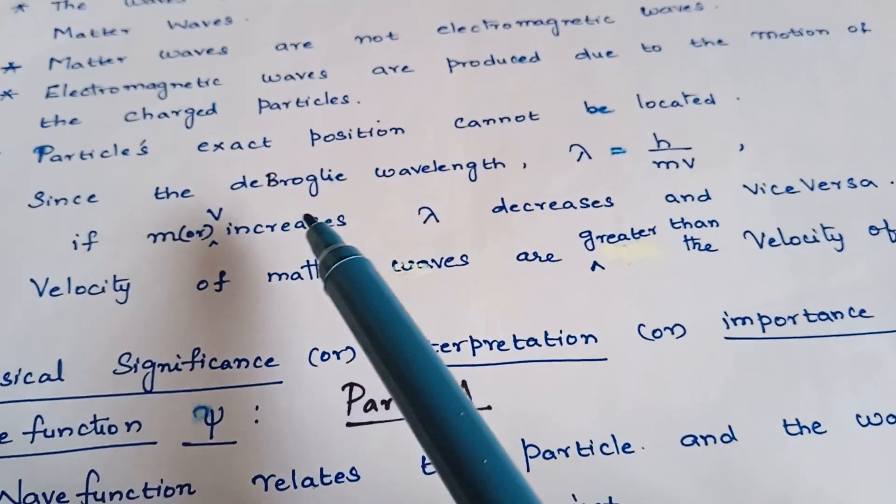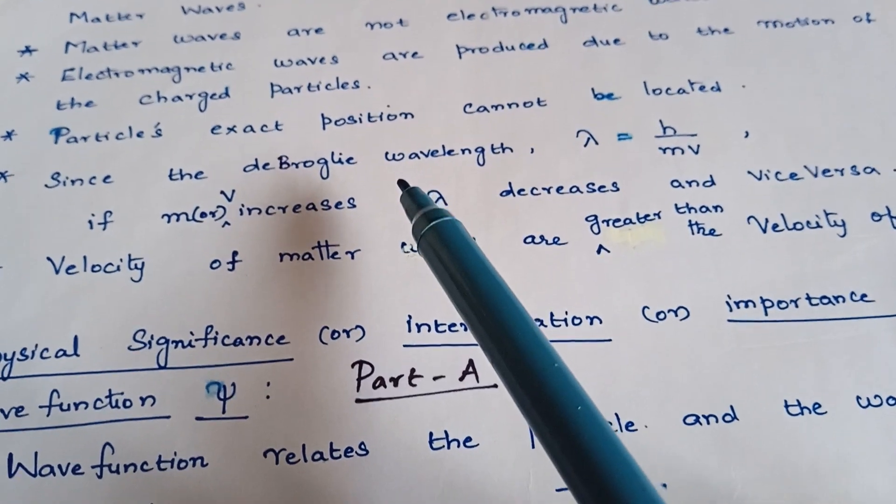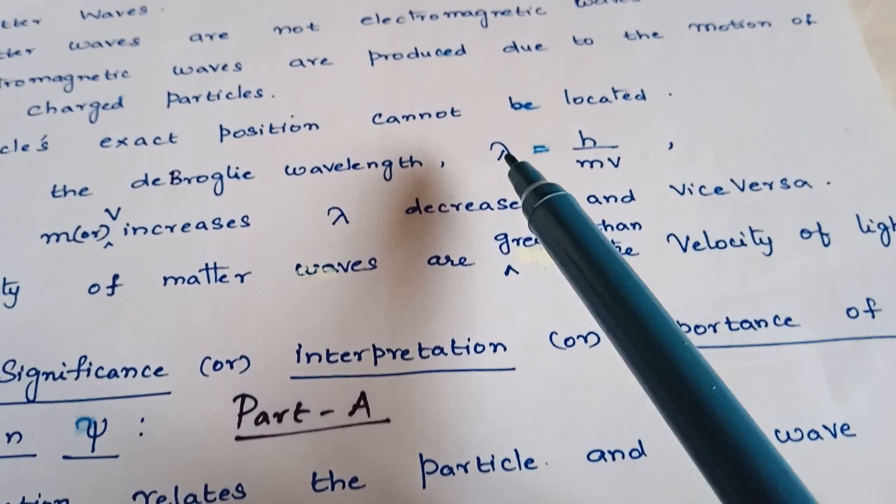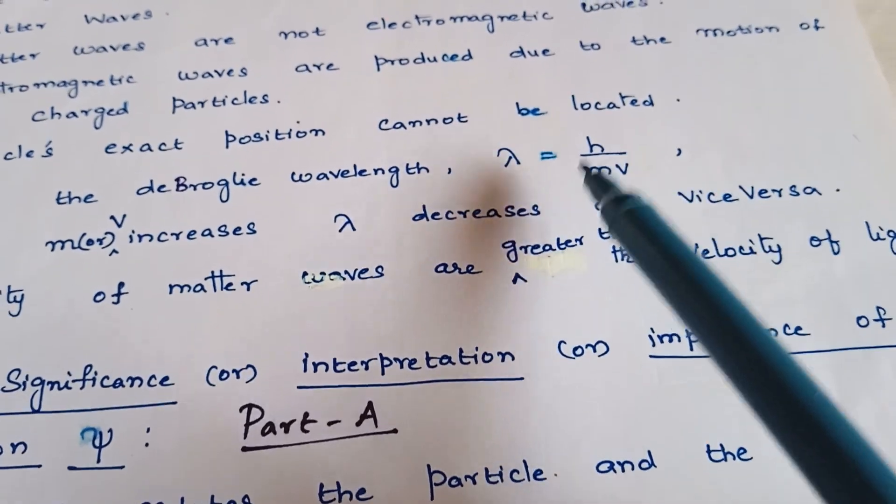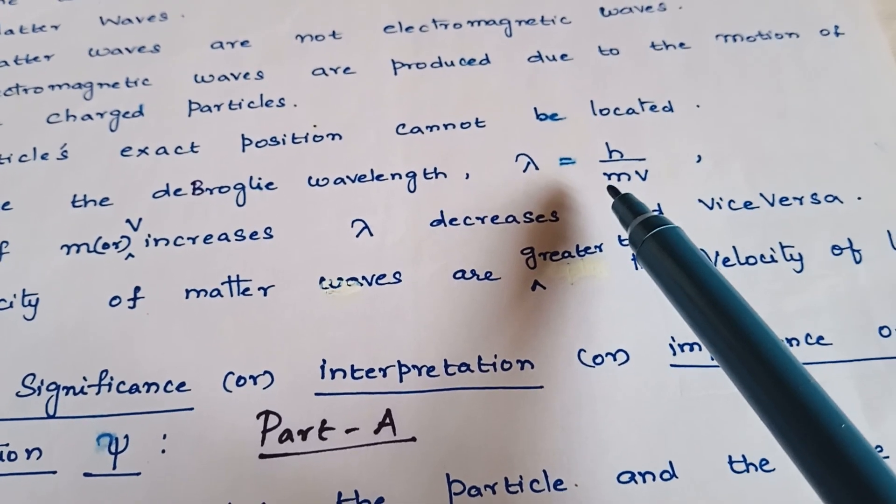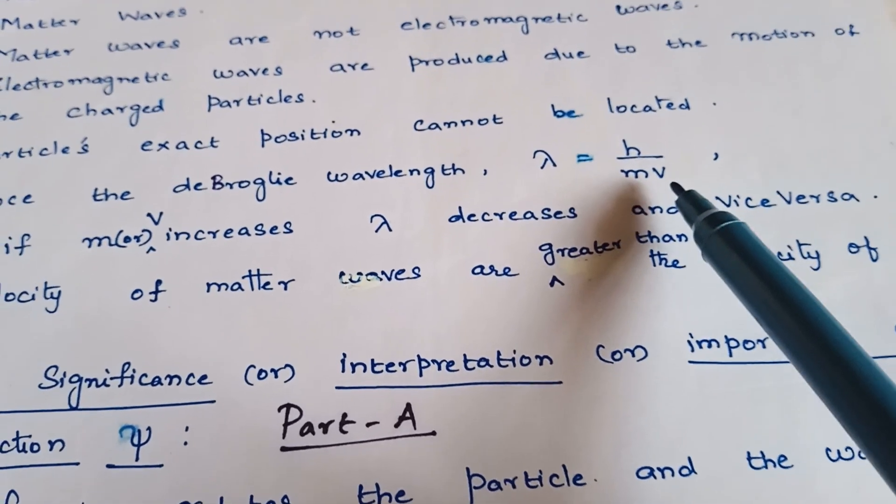Based on the de Broglie hypothesis, the de Broglie wavelength lambda is equal to h by mv, where h is Planck's constant, m is the mass of the moving particle, and v is the velocity of the particle.